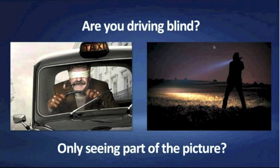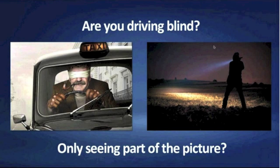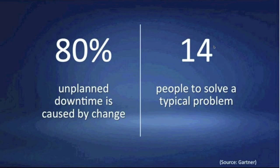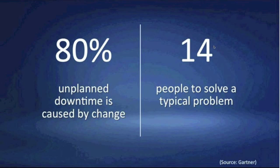Most organizations we deal with find themselves in a siloed environment. In many cases, the silos create pools of information — pools available to the network operations team, the Windows server management team, or the Unix team. While those pools are very useful to those individuals, they don't help provide the bigger picture needed when making critical business decisions. As a result, 80% of unplanned downtime — a Dartmouth statistic — is caused by changes made in the environment, and an average organization has to throw 14 people at a problem in order to solve it.